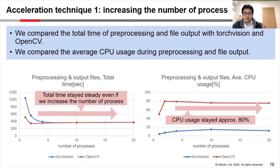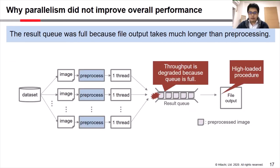Now let us discuss why parallelism did not improve overall performance after we added file output. After finishing preprocessing in every single thread, preprocessed images are stored in a result queue waiting for the next file output procedure. However, file output is a high-load procedure and takes much more time than preprocessing. The result queue becomes full and degrades throughput. Thus, we decided to increase the number of result queues and observe the performance.